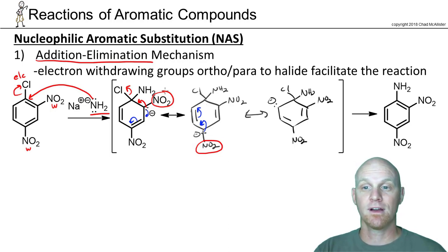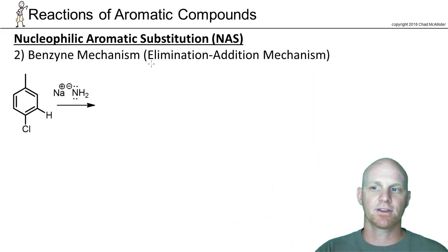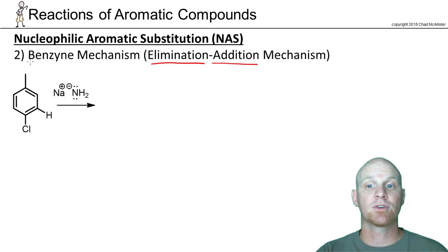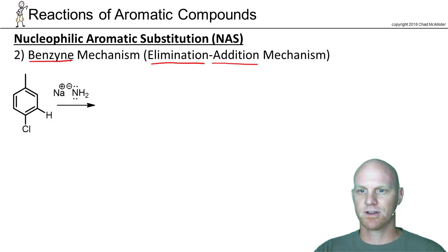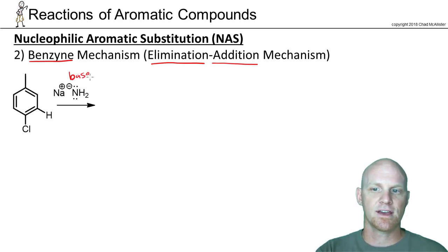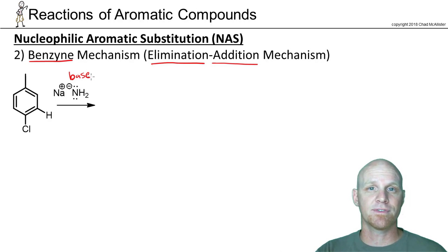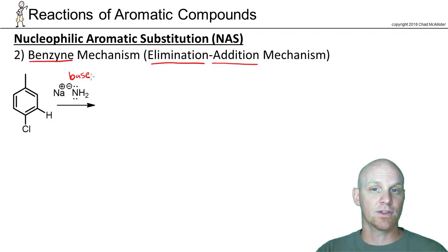We also need to look at the converse mechanism: elimination-addition, sometimes called the benzyne mechanism, named for the intermediate that looks like benzyne — it appears to have a triple bond in the middle of the benzene ring, which is really strange and not very stable. In this case, the amide ion acts as a base instead of a nucleophile. Because the intermediate is benzyne rather than an anion, electron-withdrawing groups don't stabilize it in the same way. This mechanism is usually favored when we don't have electron-withdrawing groups at the ortho and para positions.